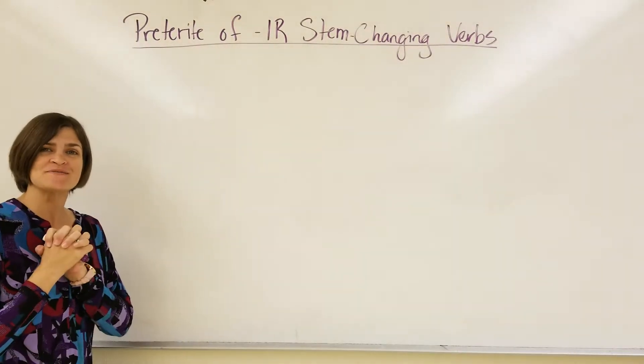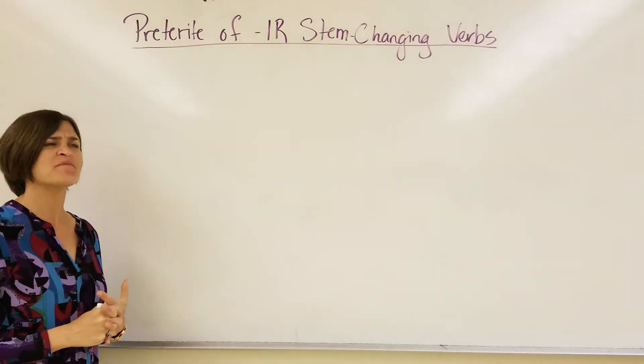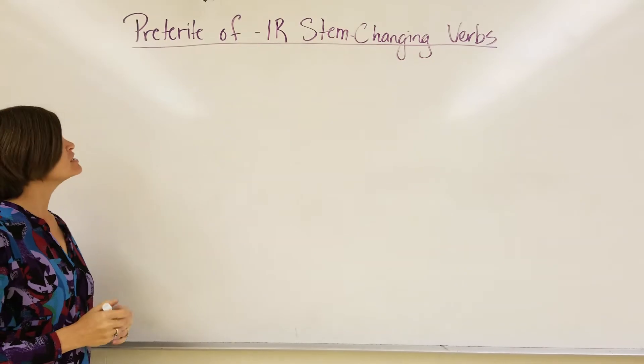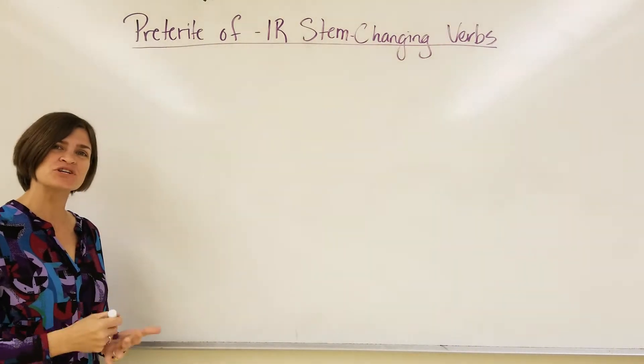All right, so we made it to chapter 6 in Spanish 2, which is exciting. Chapter 6 is the final chapter that we cover in Spanish 2. One of the concepts is that we're going to learn how to conjugate IR stem-changing verbs in the preterite.